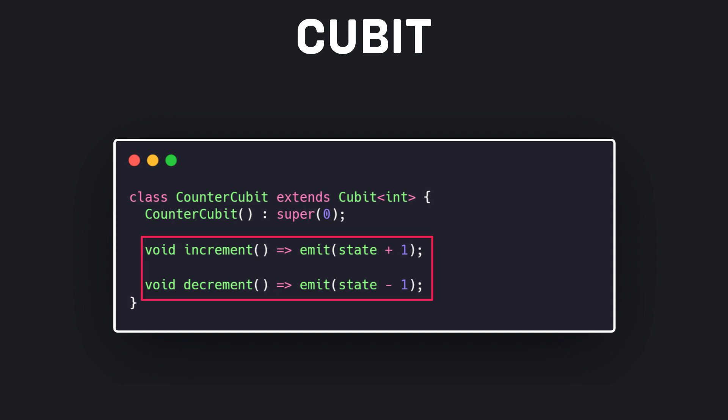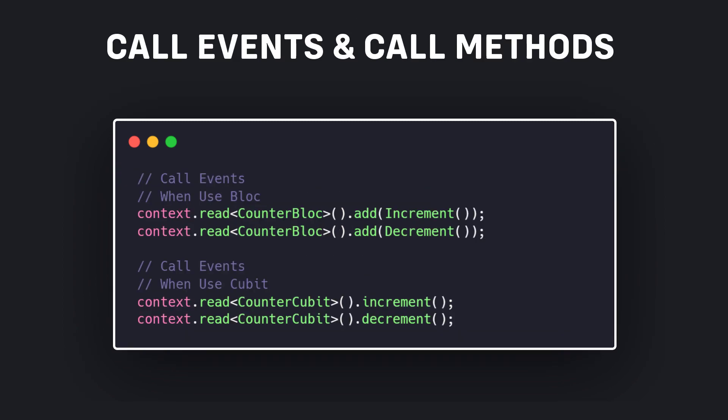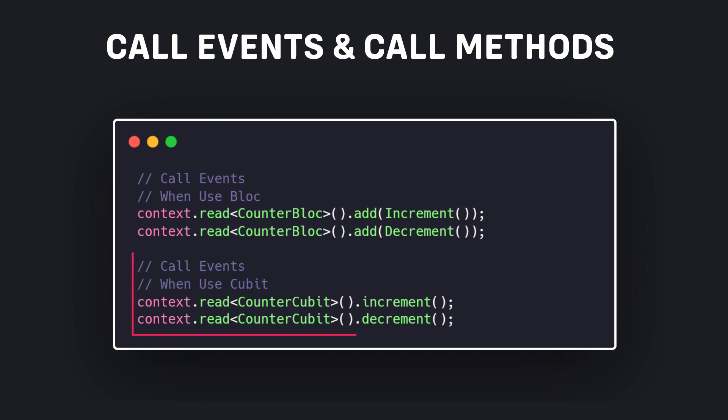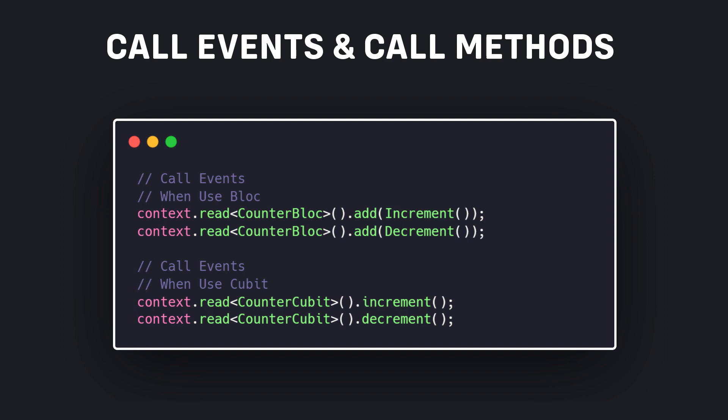To call events in bloc, we must use the add method and then pass the event class to it. But in cubit, it is enough to simply call the method directly. The difference between bloc and cubit is essentially just what I mentioned — and as you can see, cubit is much simpler.